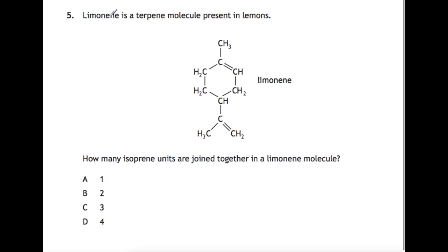Question 5. Limonene is a terpene molecule present in lemons. How many isoprene units are joined together in the limonene molecule? Isoprene contains 5 carbons. So what I would do is count up how many carbons you have and divide by 5. So we have 1, 2, 3, 4, 5, 6, 7, 8, 9, 10. So you're going to do 10 divided by 5. That's your isoprene. So you have 2 isoprene units. The answer is B.